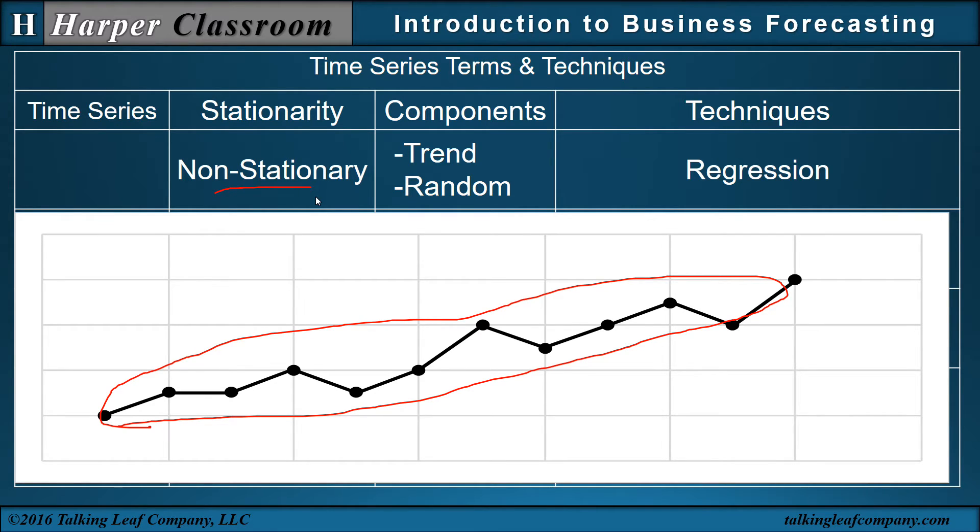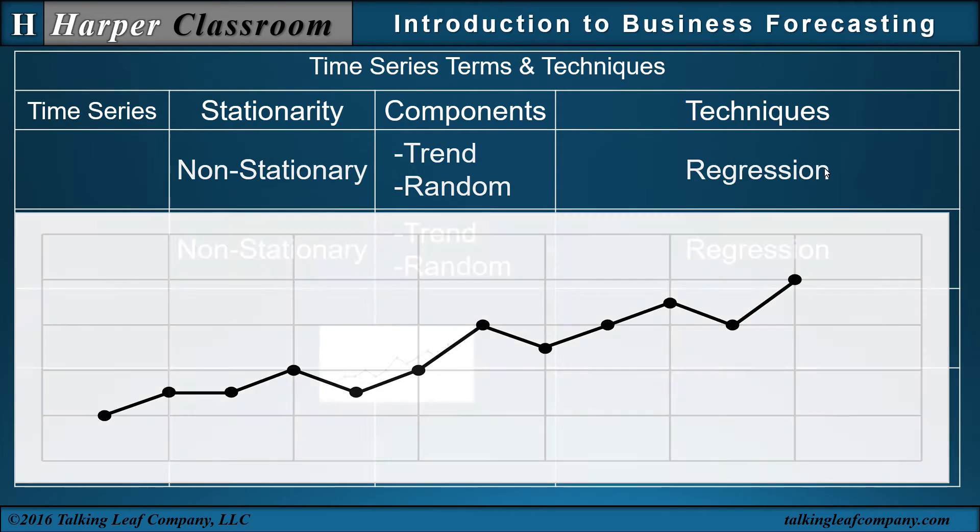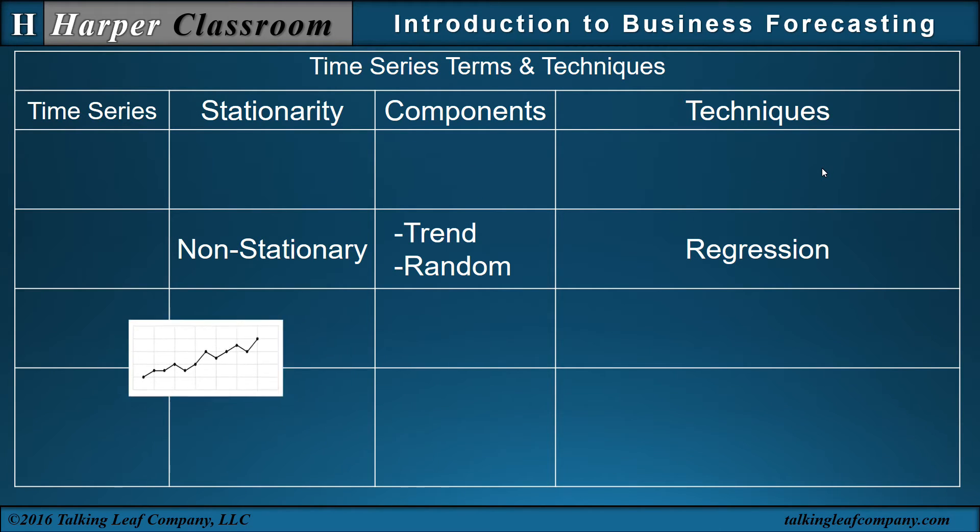Well, the non-stationary nature of the time series is causing variation, and that's referred to as a trend component. But the variability around the trend line will be the random component. So when you have a non-stationary time series with a trend and random component, the technique of preference is regression. And that's the second time series.